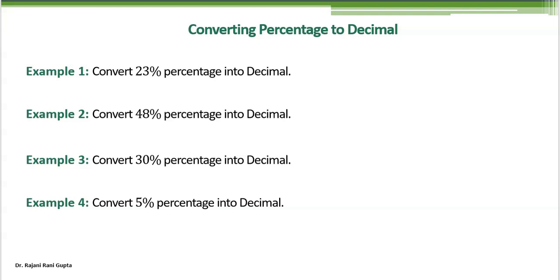Now let's move to the example where we will see how to convert percentage to decimal. First example: convert 23% into decimal. So 23 percent, we write it as 23 percentage means divide by 100. Now we want to convert it into decimal. We see how many zeros are here: 2 zeros. So starting from the right side, when we write 23, the decimal is here at this position. From here, we move two positions on the backward side. So the decimal reaches here.